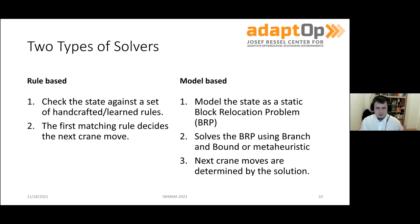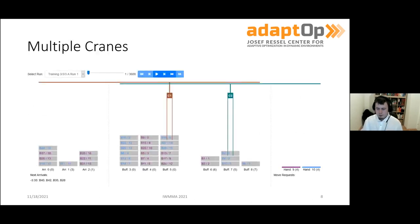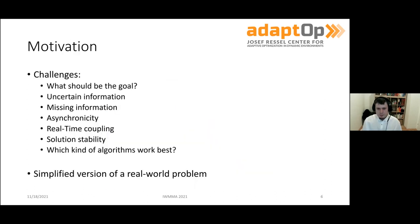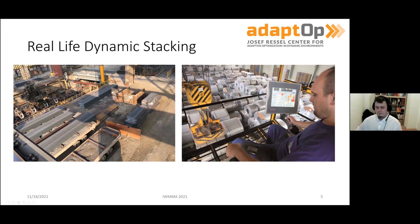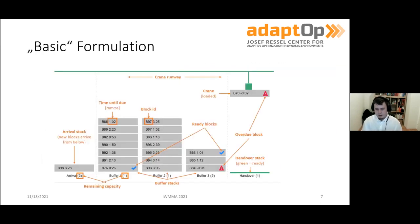We solve the block relocation problem using a branch-and-bound algorithm — you could also use a metaheuristic like a genetic algorithm. The next crane moves are then determined by the branch-and-bound solution. We can usually solve the abstracted warehouse scenarios with branch and bound. In the real-world warehouse on the right side there are over a thousand individual buffer areas — no branch-and-bound algorithm would ever finish there, so you must use a metaheuristic. For smaller abstracted variations you can use exact solvers to a pretty satisfying degree.